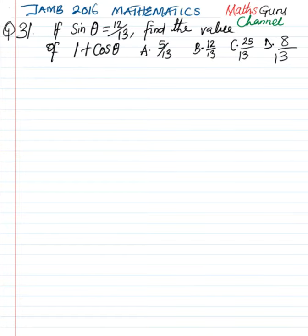Question number 31. If sine theta is equal to 12 over 13, find the value of 1 plus cos theta.